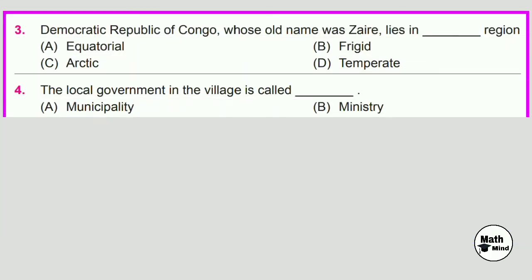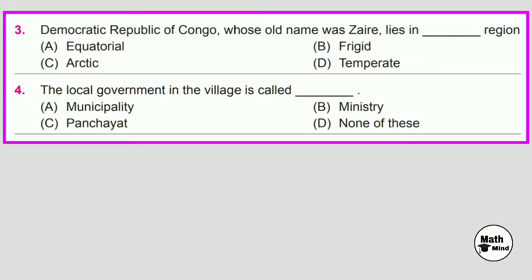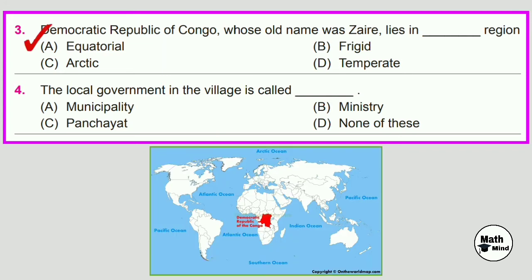Question No. 3: Democratic Republic of Congo, whose old name was Zaire, lies in the dash region of the world. Correct option is A, equatorial region.